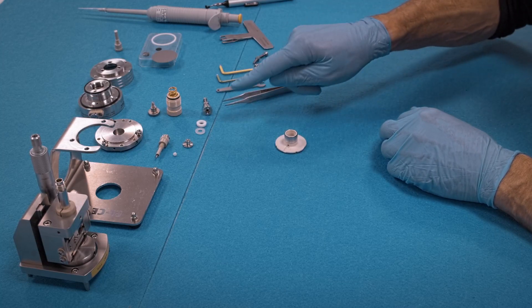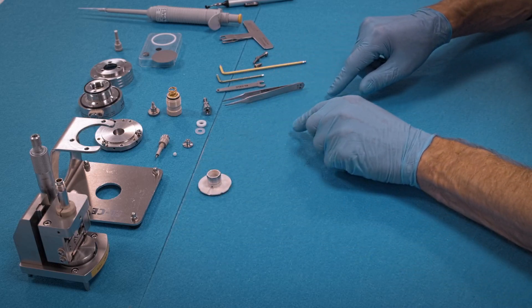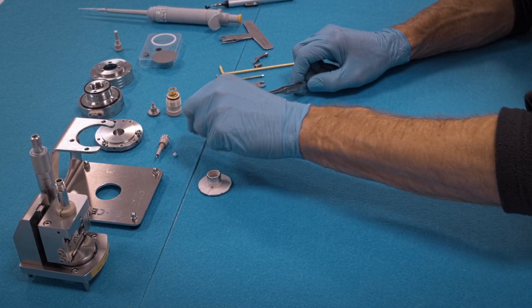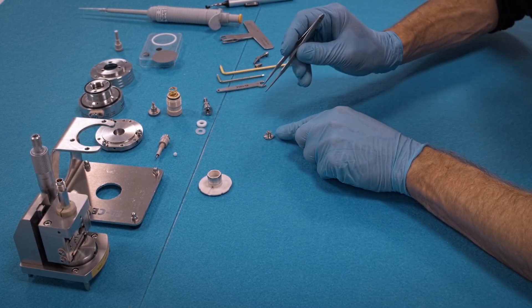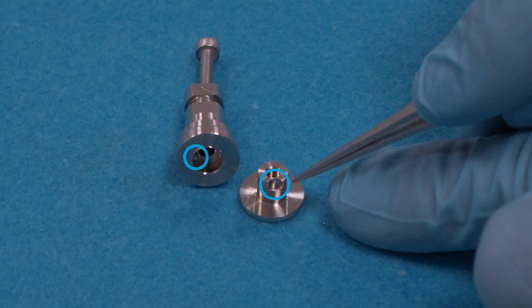Now we assemble the central piston, comprised of five parts. This is the upper part of the piston which has a notch. This notch needs to be aligned with a set screw in the counterpart.